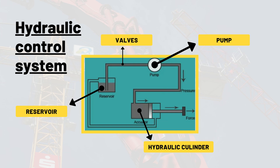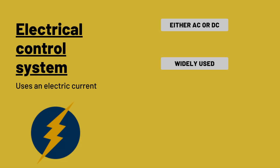Hydraulic control systems can be controlled both manually and automatically. They are complex to assemble and any leakage in the system will always lead to pollution. Last but not least, we have the electrical control system. A control system that uses an electric current — either AC (alternating current) or DC (direct current) — as a source of power supply is termed an electrical control system.